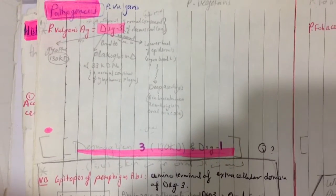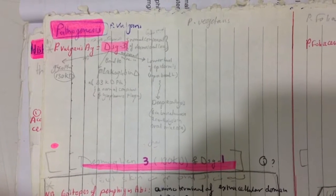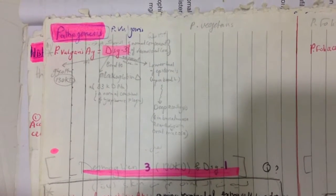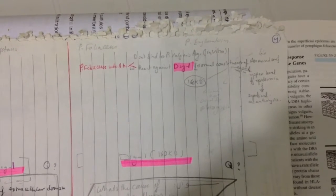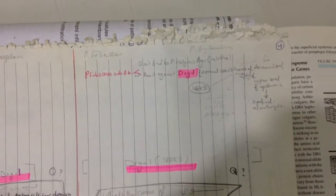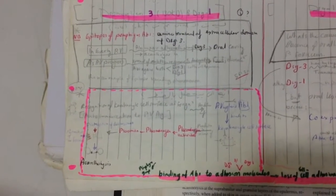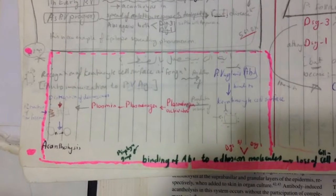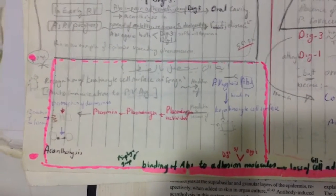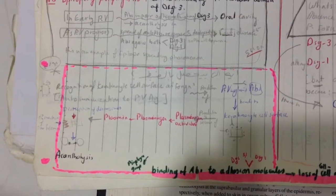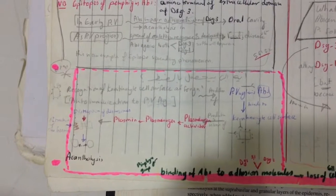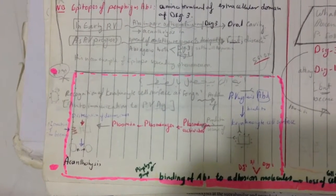Desmoglein 3 is a 130 kilodalton glycoprotein that binds to plakoglobin and is expressed in the lower suprabasal layer of the epidermis, leading to deep acantholysis. Desmoglein 1 is a 160 kilodalton protein, a normal constituent of the desmosomal core, expressed in the upper epidermis, leading to superficial acantholysis. Recognition of keratinocyte cell surface as foreign leads to production of pemphigus autoantibodies that bind to keratinocyte cell surface, leading to plasminogen activator, plasmin, destruction of desmosomes, and acantholysis.